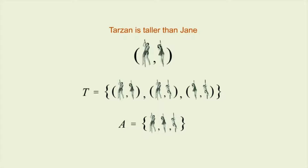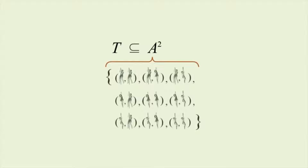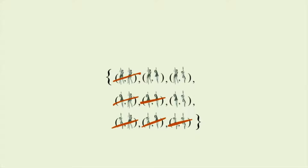As we saw, a binary relation from one set to another is a subset of their Cartesian product. So T is a subset of the Cartesian product of set A with itself, or A squared. A squared contains all nine possible ordered pairs which can be created from the three members of set A. If we eliminate all the ordered pairs of A squared whose first element is not a person taller than the second element, we get relation T.